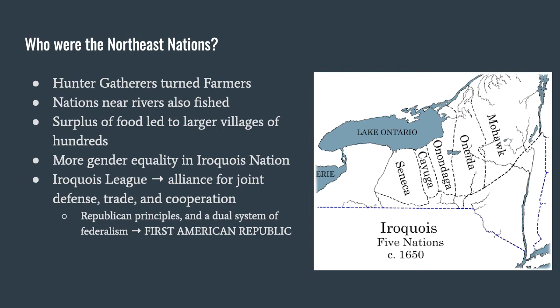One larger nation in particular that is important to know is the Iroquois nation, which is actually an umbrella term for many groups that shared a common language. In the Iroquois nation as a whole, there is more gender equality, which sets the Northeast nations apart. The Iroquois also joined together to create the Iroquois League, also called the Iroquois Confederacy — an alliance that promotes trade and common defense.